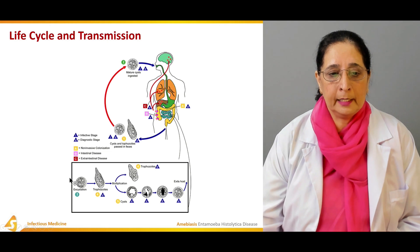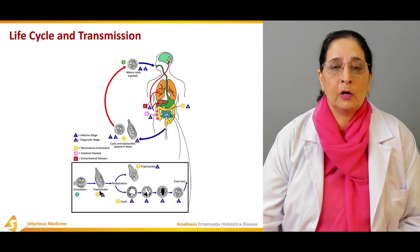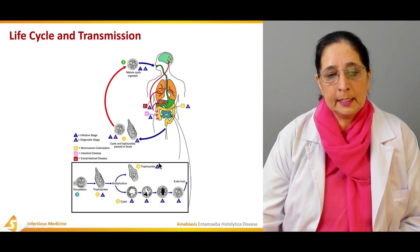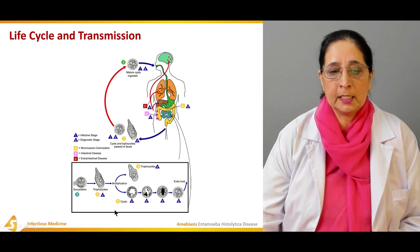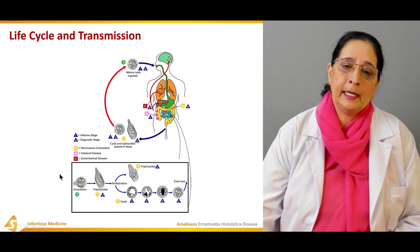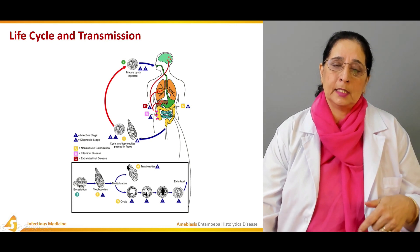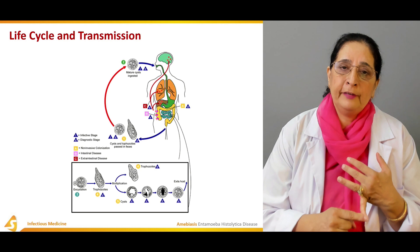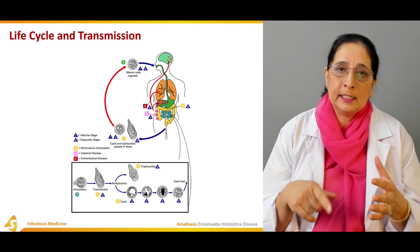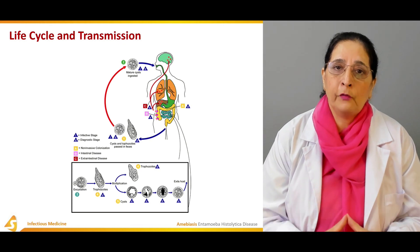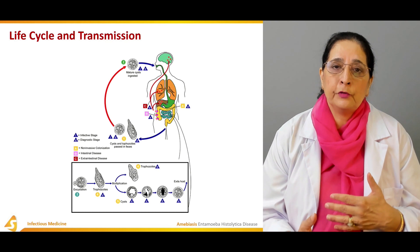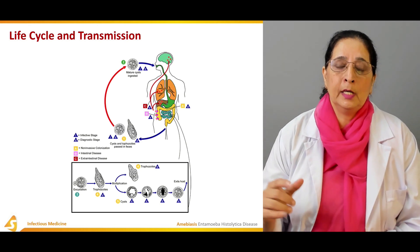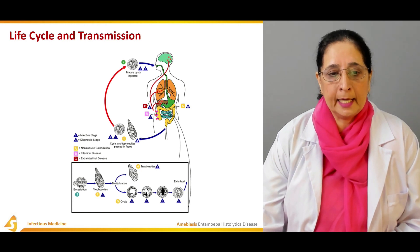The ingested mature cysts are encysted and cause formation of trophozoites. The trophozoites then multiply and develop back into cysts, which exit the host and are ingested by another person. The life cycle is human to human: cysts exit in feces, are ingested, grow in the intestine through encystation, trophozoites form and mature, then form new cysts passed again in feces.